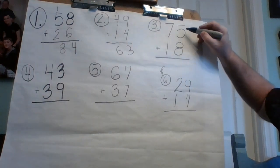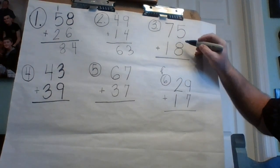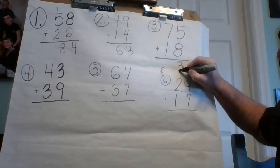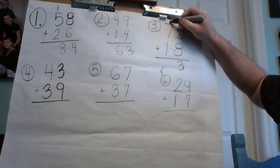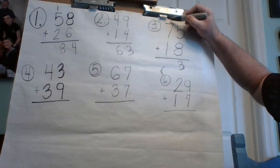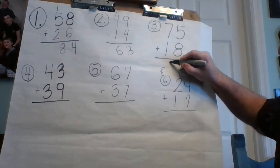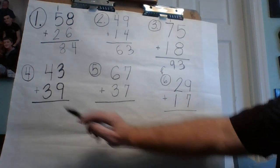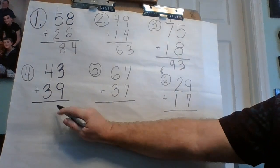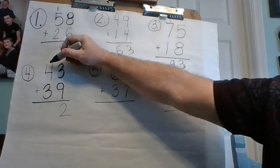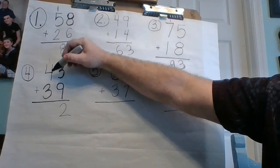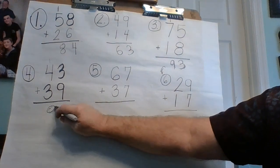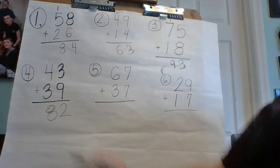Number three: five plus eight is thirteen — the three goes here and the ten goes with the other tens. Count that one first so you don't forget it. One plus seven is eight, plus one more is nine — did you get 93 for number three? I bet you did! Number four: nine plus three is 12 — the two goes here, the ten goes with the other tens. One plus four is five, plus three is eight — number four is 82.